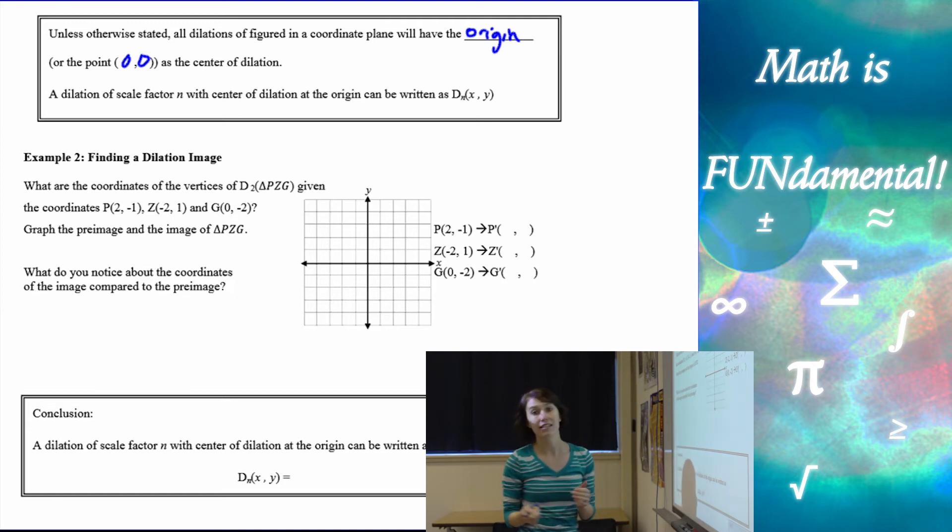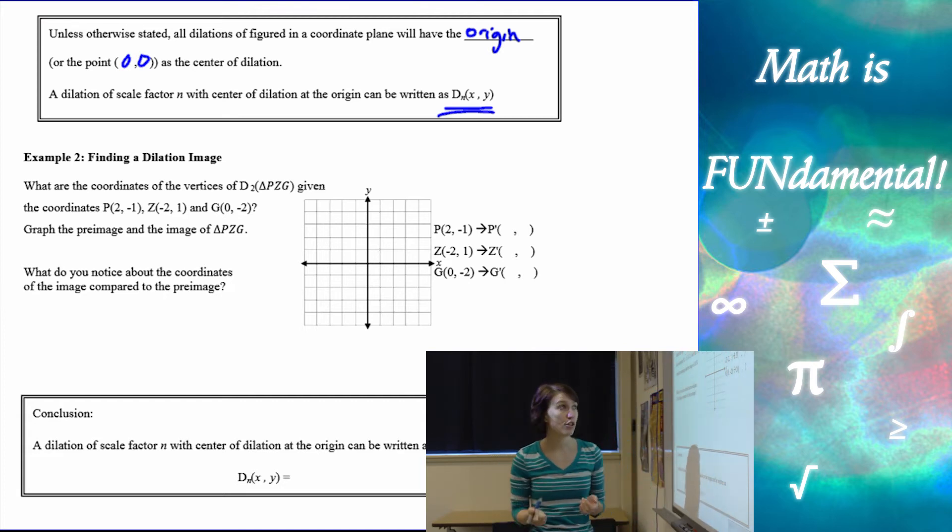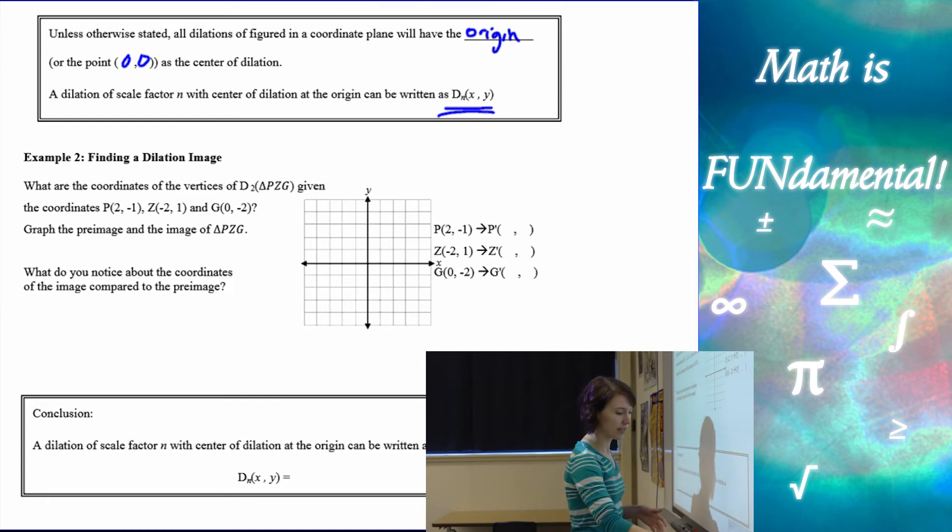And a dilation with factor N, scale factor N with center of dilation at the origin can be written simply as that. So that's our new notation. If you notice, let's go back,